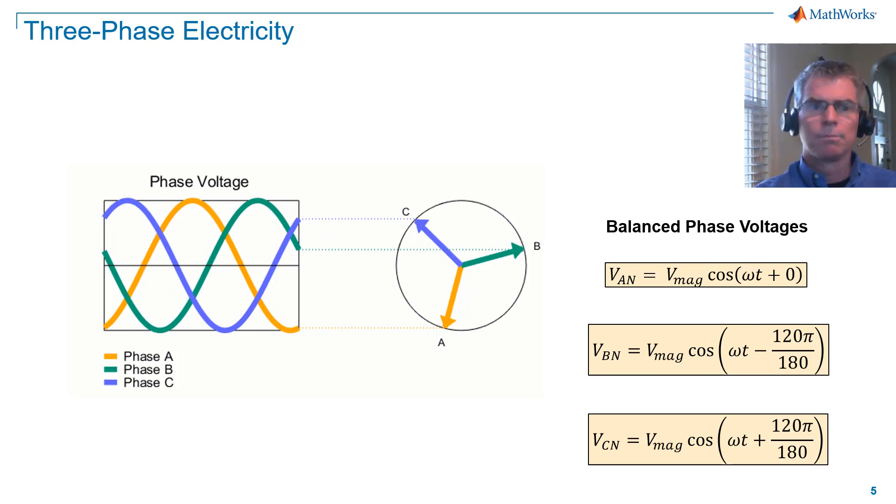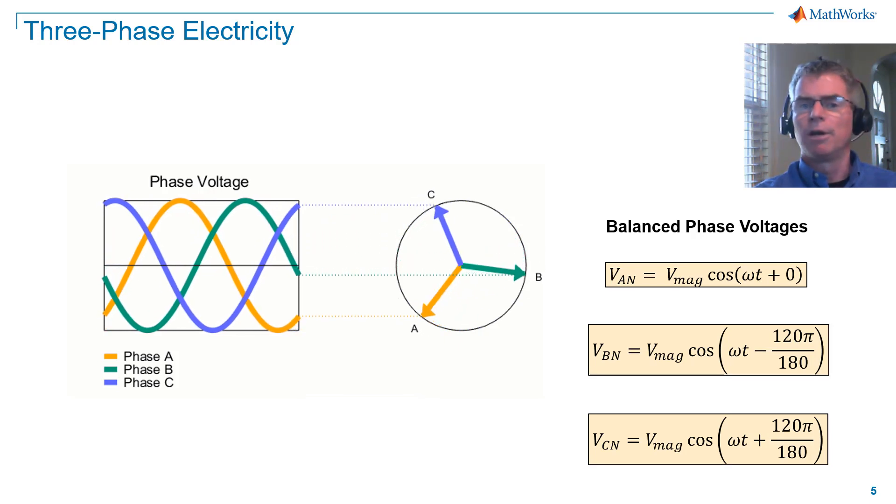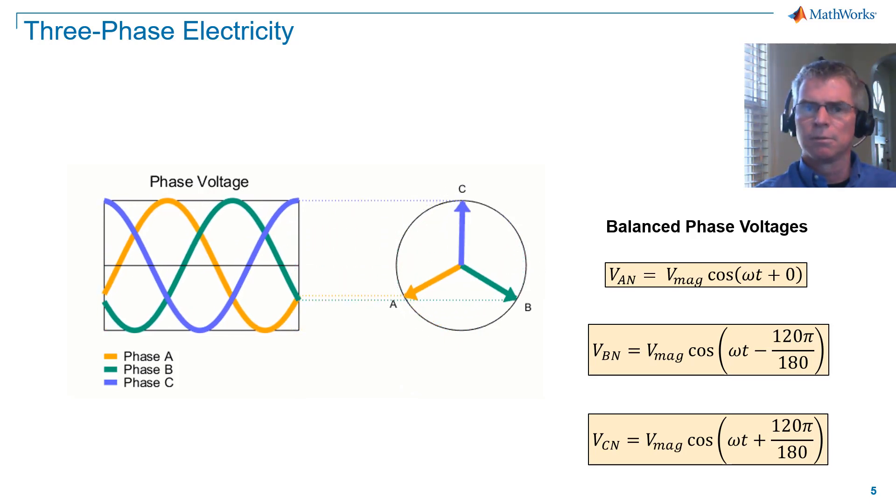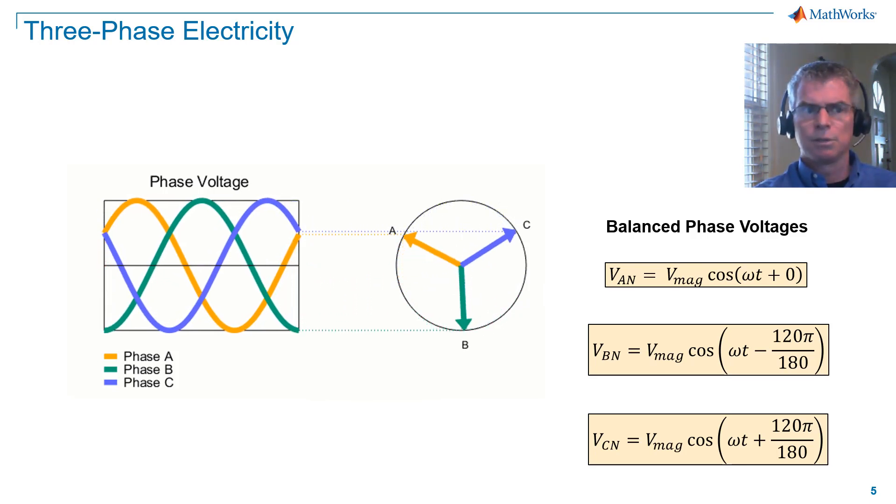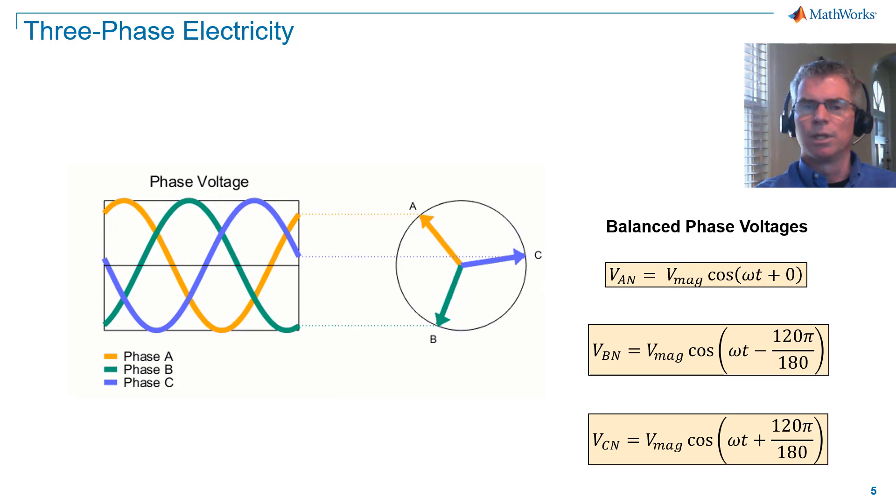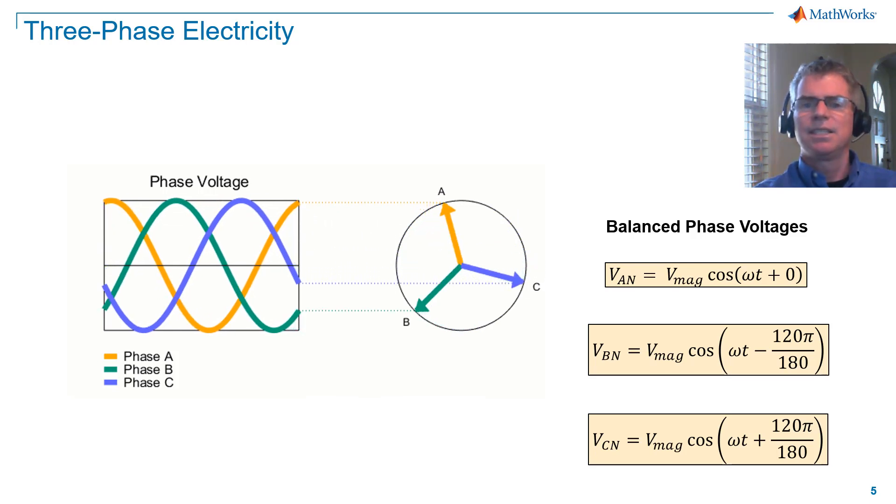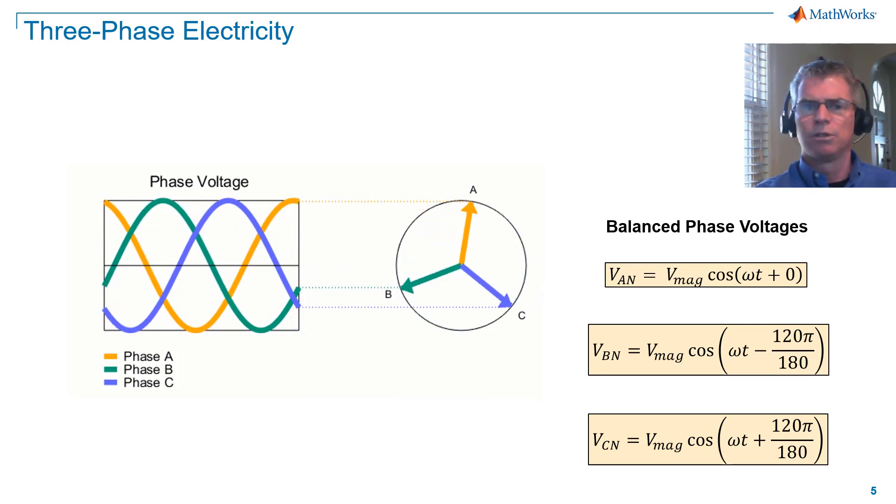In trigonometric form, we see that phase A is our reference with zero degrees phase shift. Phase B is shifted by minus 120 degrees. For radians, we multiply by pi divided by 180. Phase C is phase shifted by plus 120 degrees.